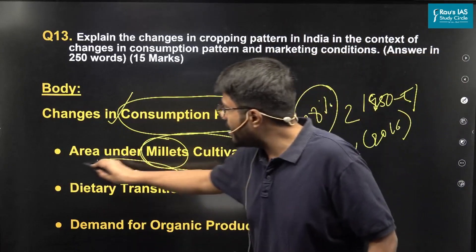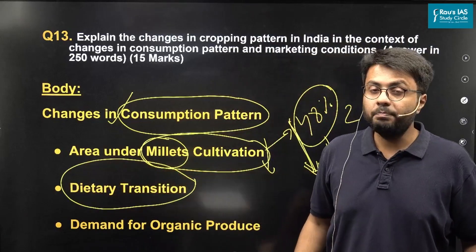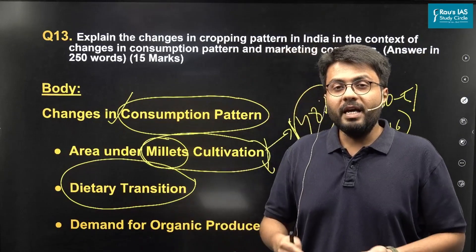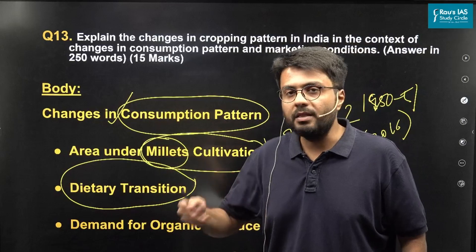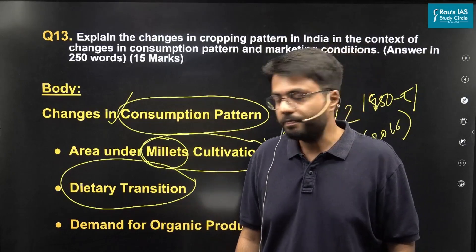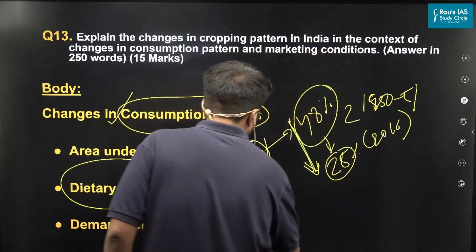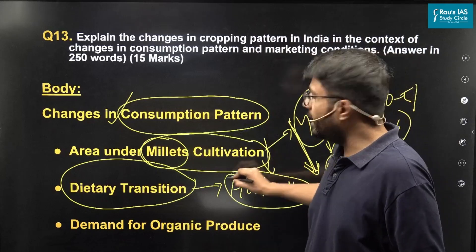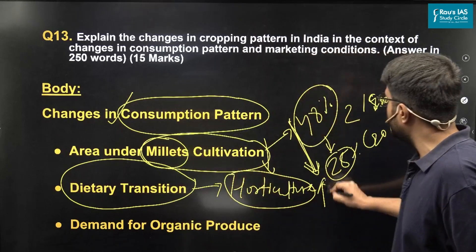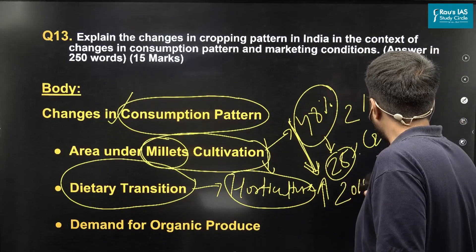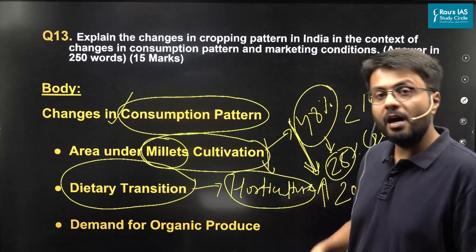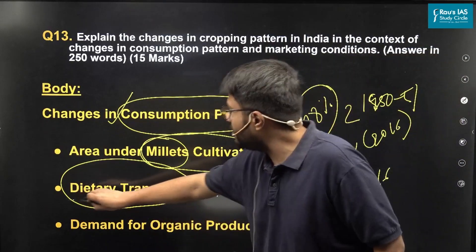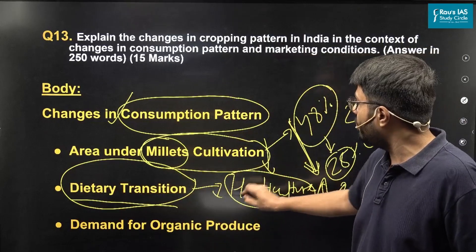We can also see dietary transitions throughout the country. As people have become aware of nutritional and health aspects of many foods, we can see a rise in cultivation of pulses as well as horticultural products. The growth of horticulture in the country surpassed the cultivation of food grains in 2015–16 and has remained above food grains ever since. Thereby, because of dietary transition, we can see a transition towards growth of horticultural products.